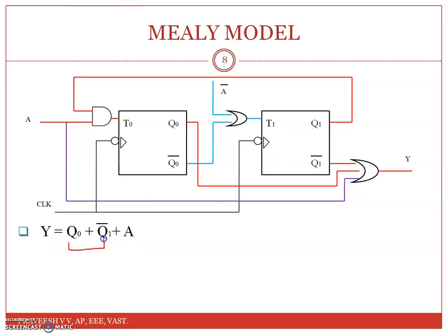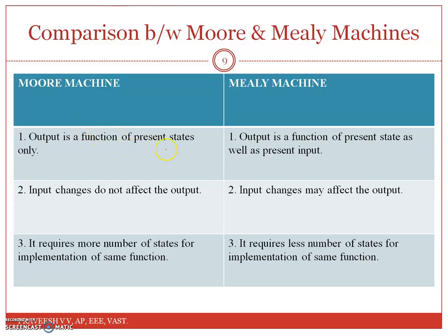y(t) is a function of s(t) and x(t), hence it is a Mealy model. In the Moore model, output is a function of present state only — input changes do not affect the output. In the Mealy model, input changes may affect the output. The Moore model requires more number of states for the implementation of the same function, whereas the Mealy model requires fewer number of states, so it is advantageous.